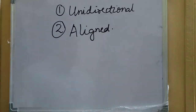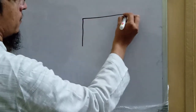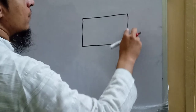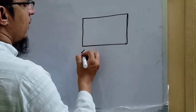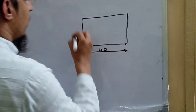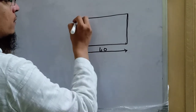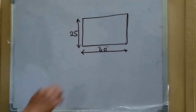In the aligned method, we change the direction of writing the dimensions according to the drawing, so this is called the aligned method — the dimension is written in an aligned manner with the direction of the drawing. For example, if we have a rectangle and want to do unidirectional dimensioning, suppose the dimensions are 40, 20, and 25 — we write them all in one horizontal direction.